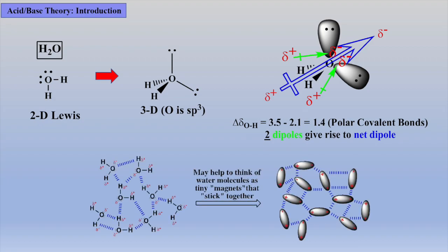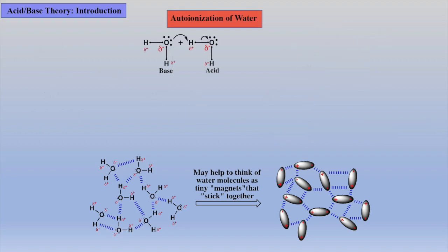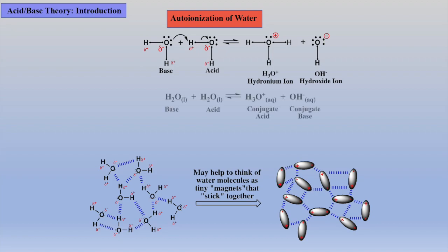Thus, it may be simpler to think of water as a bunch of polar mini-magnets that give rise to these very strong attractions called hydrogen bonding. This very dynamic system is in constant motion, and these attractions can be so strong that sometimes when these water molecules collide, one of the water molecules can take a proton from another water molecule as shown, which will afford the hydronium cation and the hydroxide anion in a one-to-one molar ratio, called the autoionization of water.